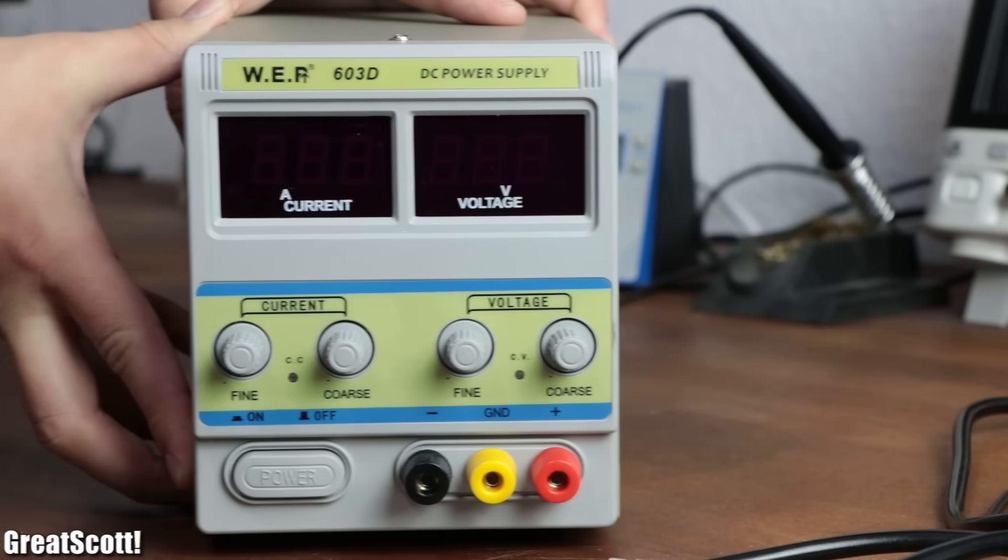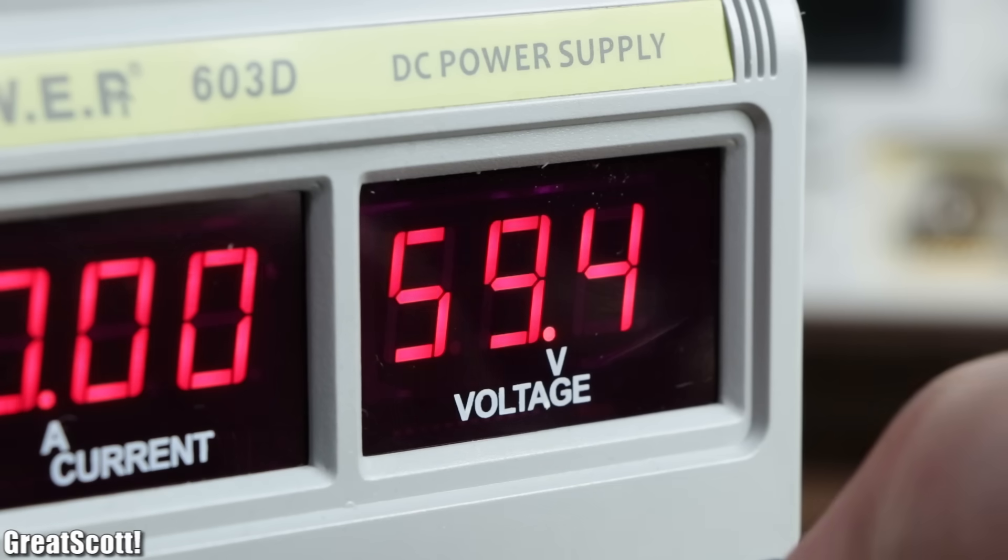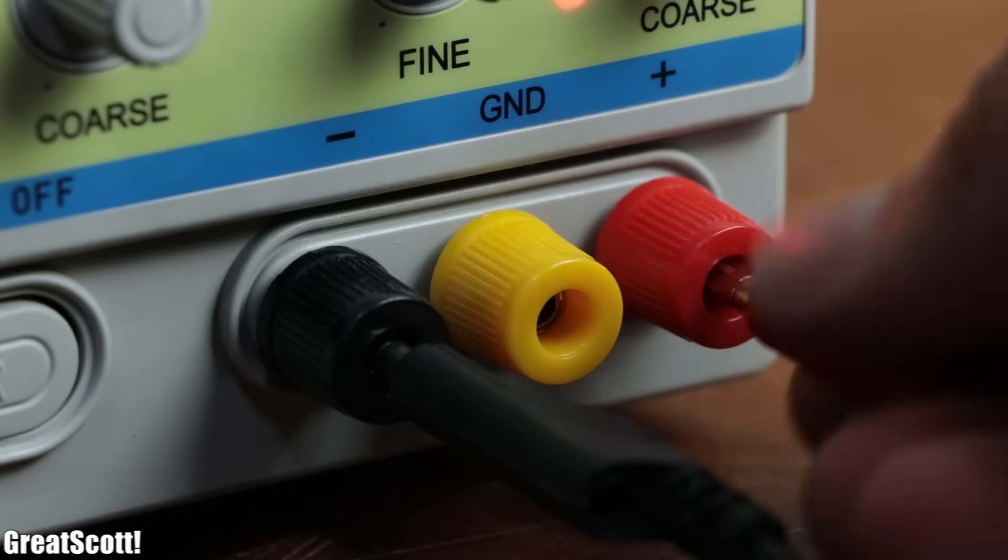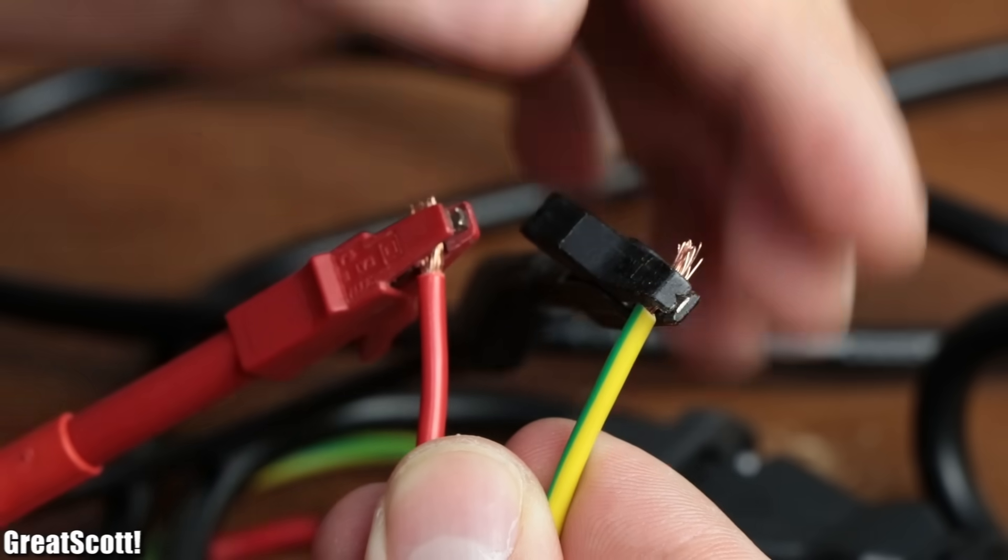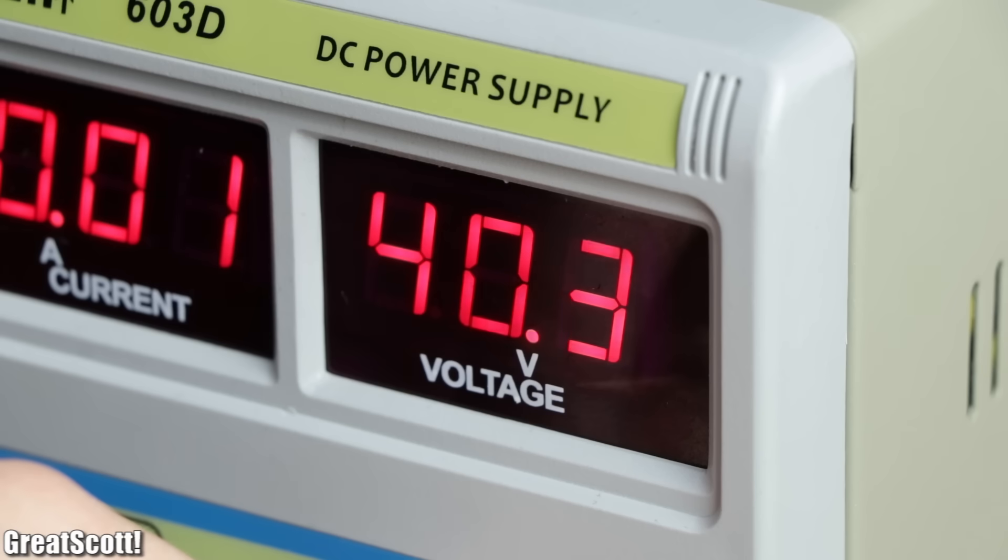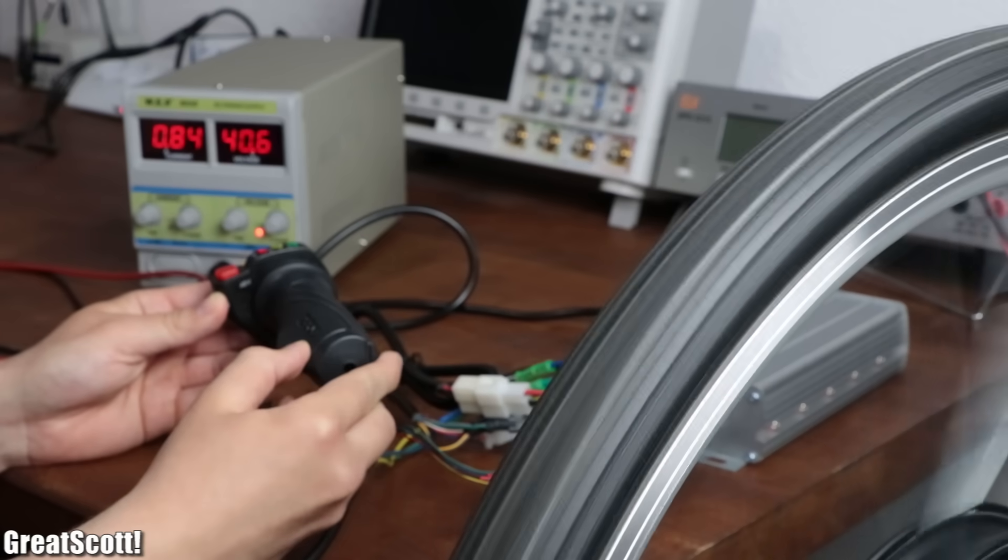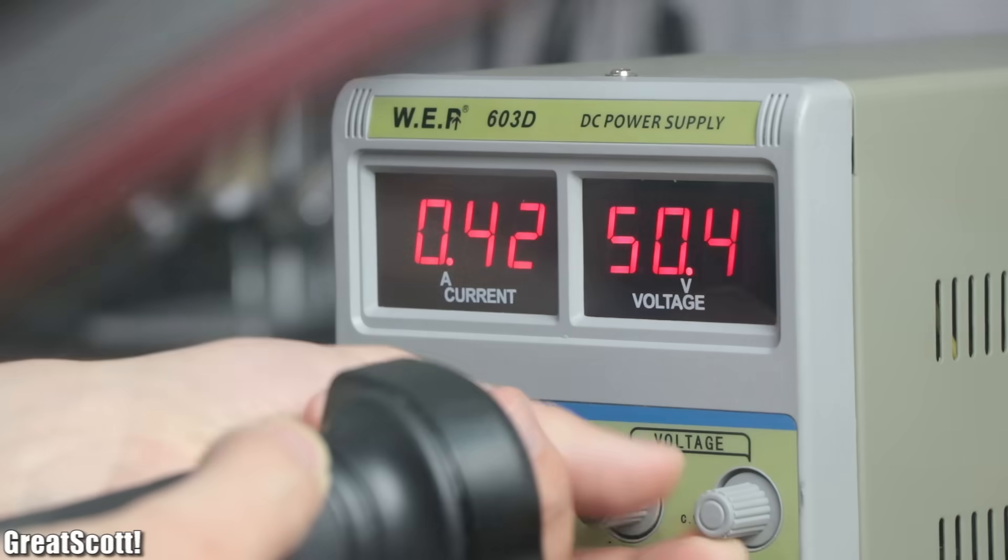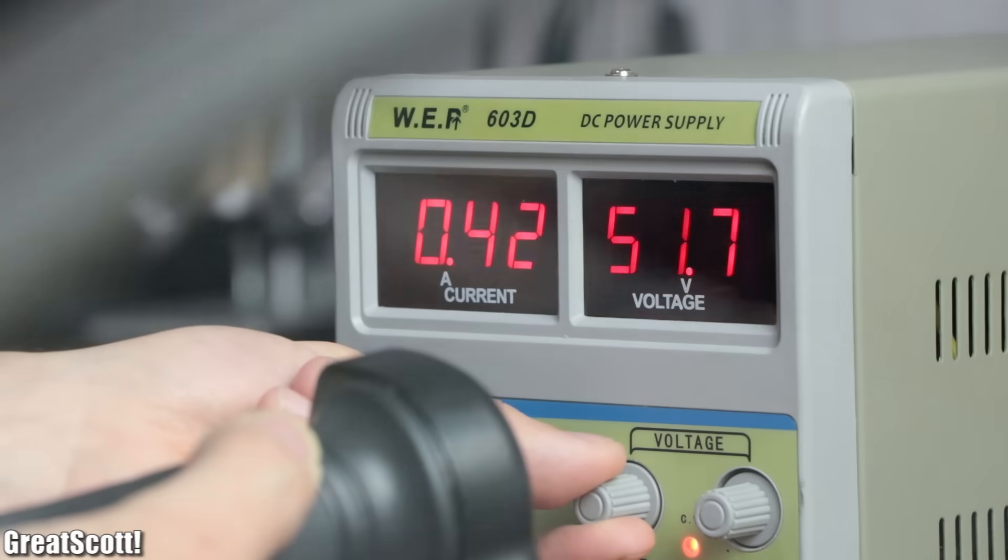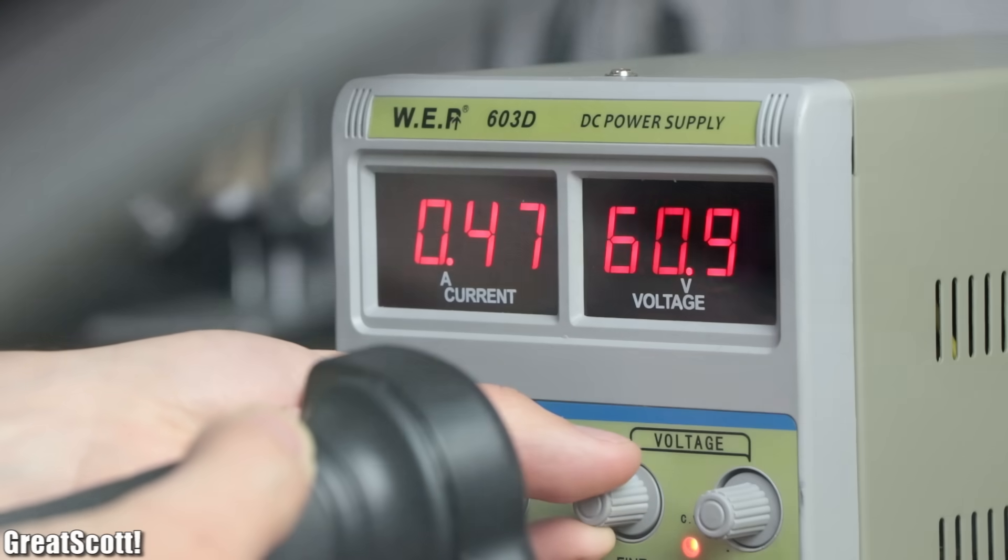To test it, I got myself a new lab bench power supply which can output up to 60 volts. So I connected its output to the input of the controller and slowly started rising the voltage. Approximately at around 40.6 volts, the controller started working how it was supposed to. Now by cranking up the voltage even more, the wheel started rotating continuously faster until I reached the limit of my power supply.